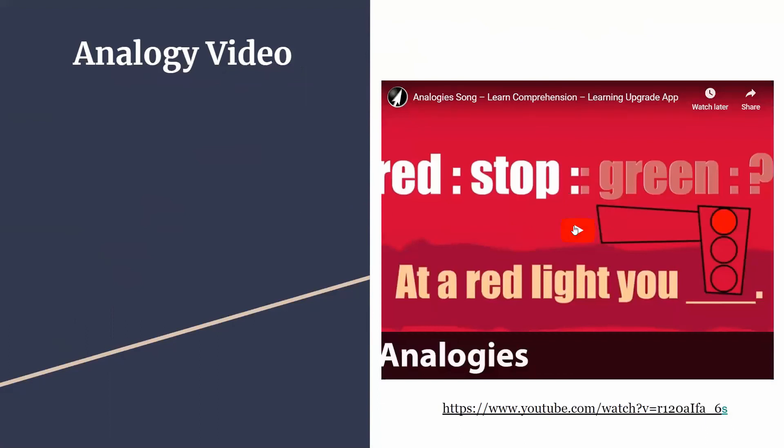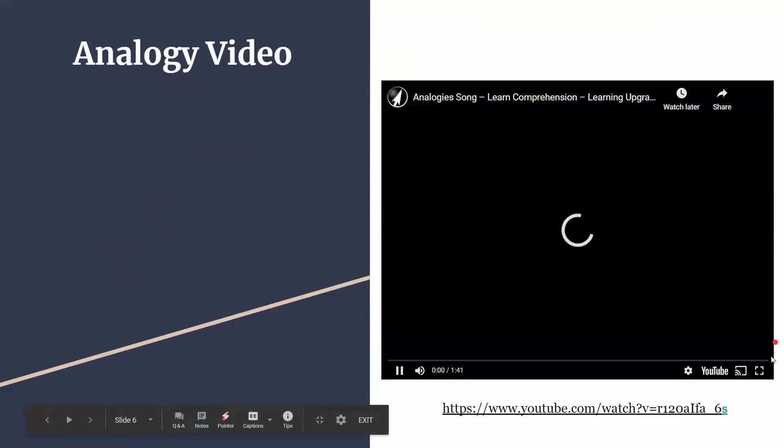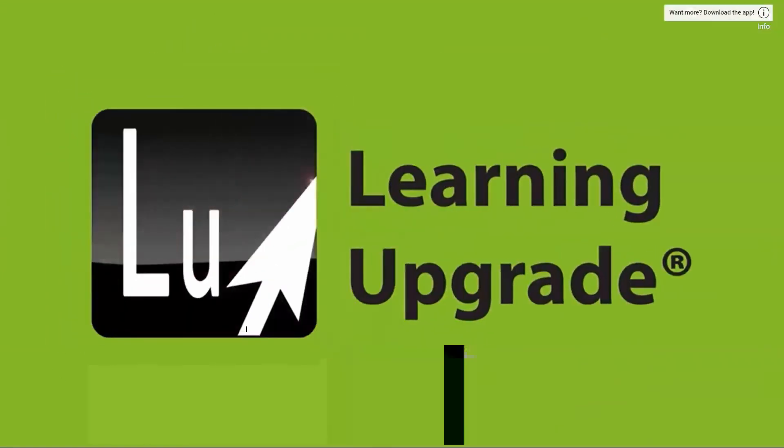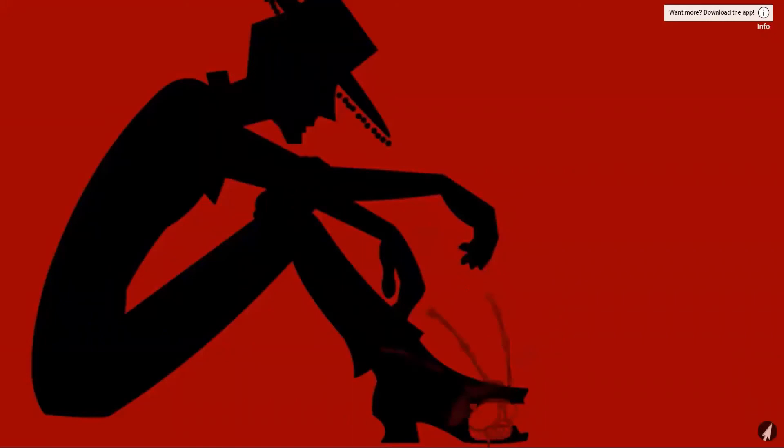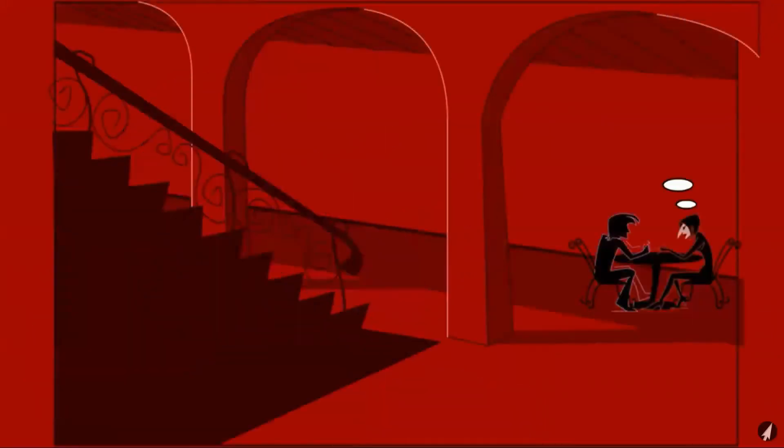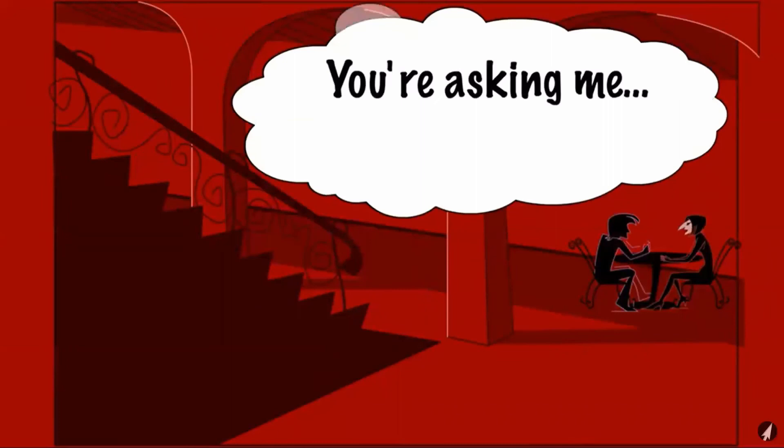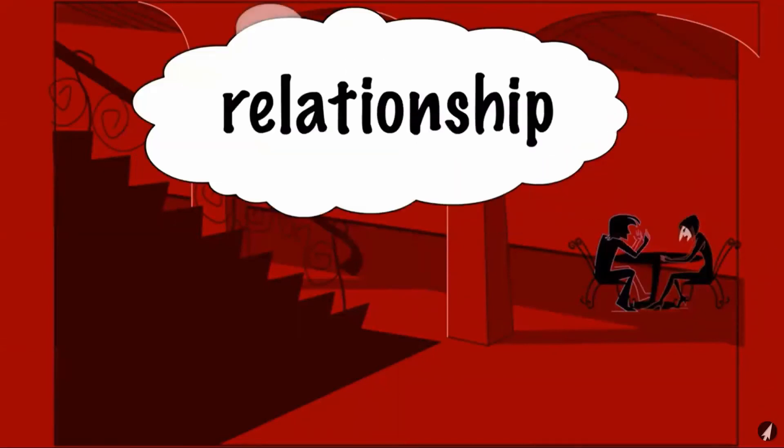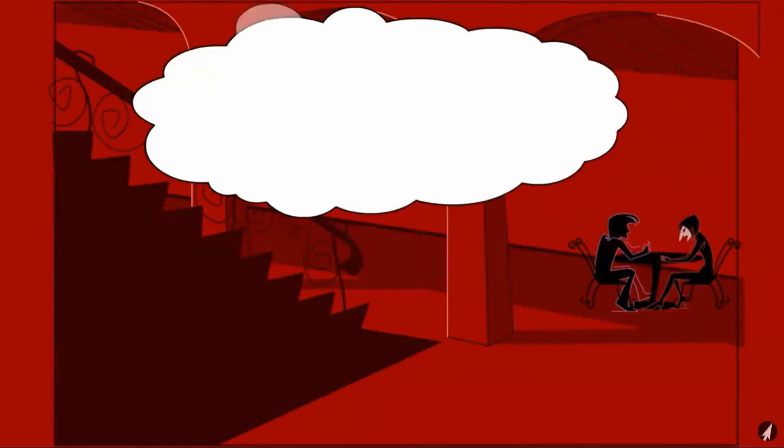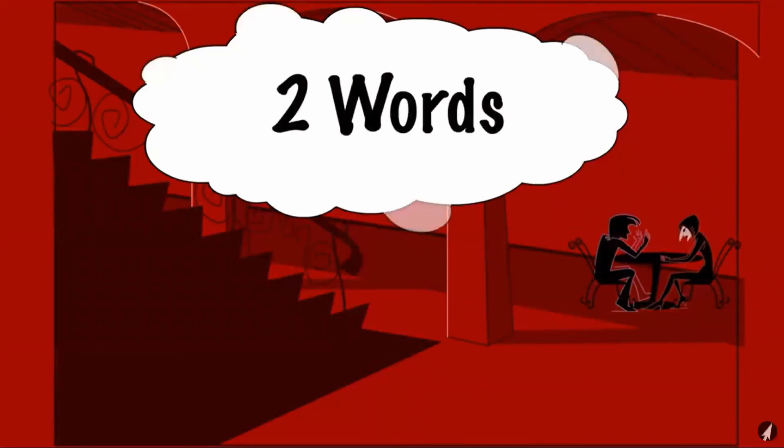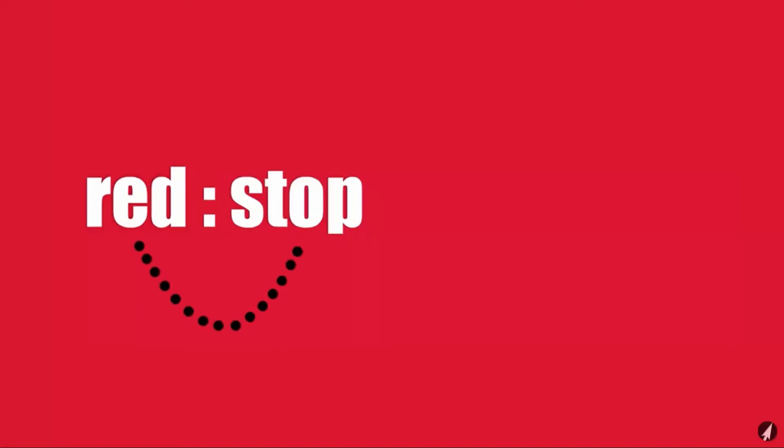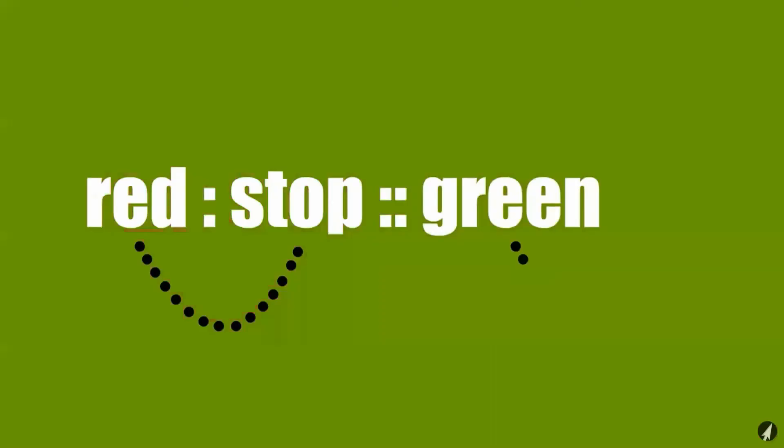And then of course we have a video. What is an analogy? It's a relationship between two words. Red is to stop as green is to what? At a red light you stop, at a green light you go.